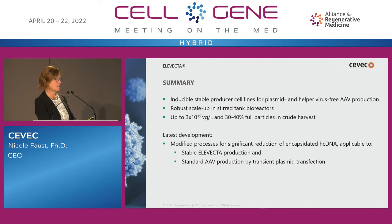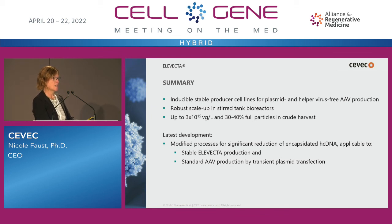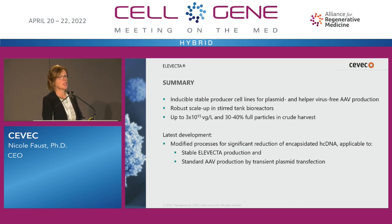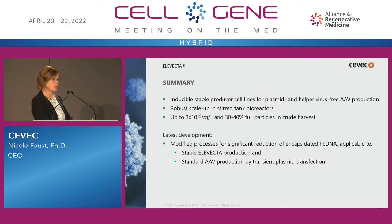In summary, we have established an inducible stable producer cell line for plasmid- and helper virus-free AAV production. We achieve robust scale-up in stirred-tank bioreactors with very competitive yields — up to 3×10^15 vg per liter with 30 to 40% full particles. And we have developed a modified process for the reduction of encapsulated host cell DNA that works with our stable LVector system as well as with conventional transfection-based AAV production methods.